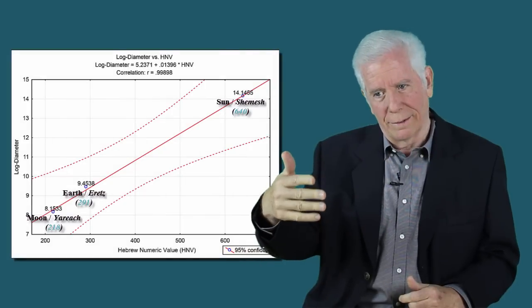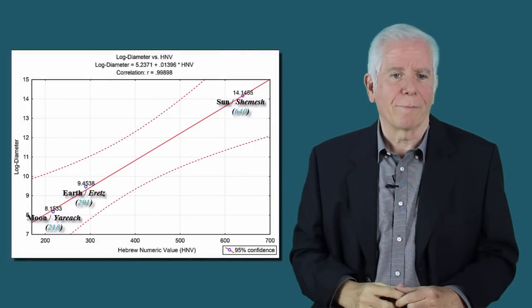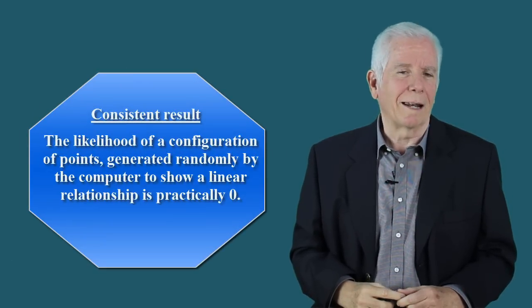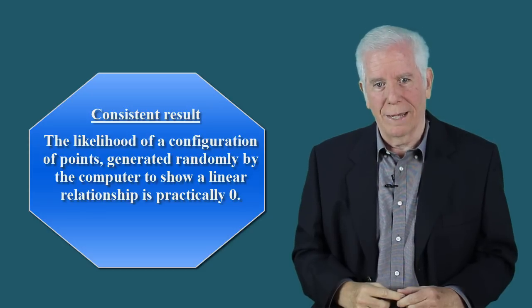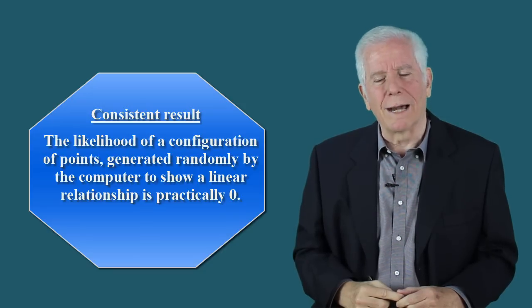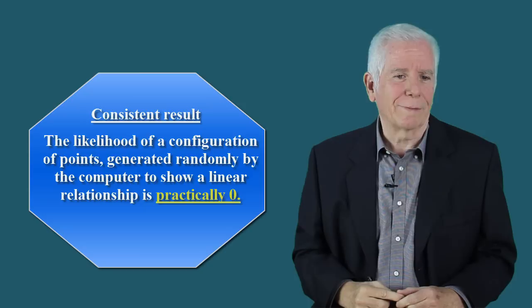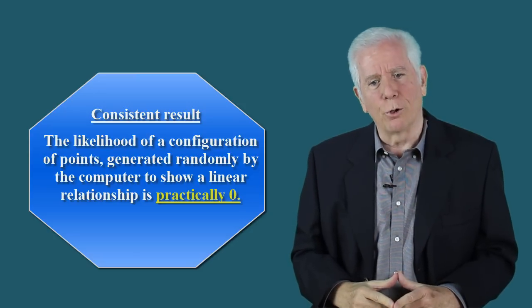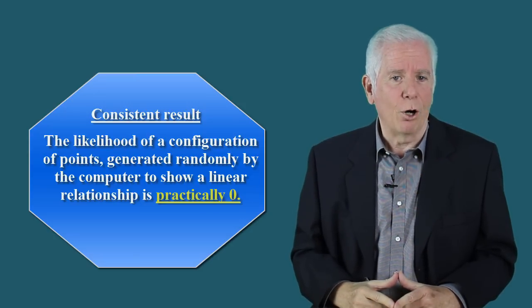Similarly to what we have actually observed with the original Hebrew words. For example, what percentage of words delivered a plot similar to the plot of the first example, the example with the moon, earth, and sun. A consistent result kept resurfacing. The likelihood of a configuration of points generated randomly by the computer to show a linear relationship is practically zero. Practically zero. Proper statistical analysis consistent with that employed in any scientific research has corroborated the scientific validity of this conclusion.